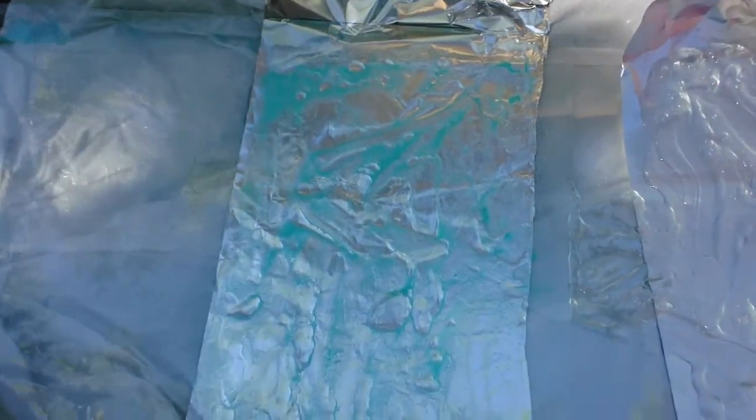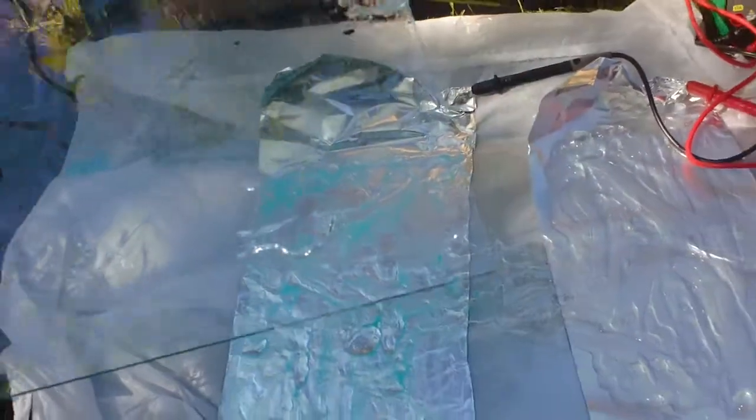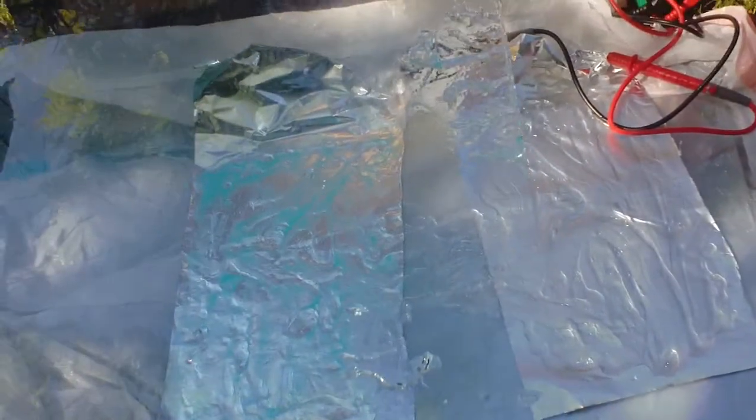The electrode with the photovoltaic paint is kept under another glass slide. This helps it heat up and improves the amperage flow throughout the cell.